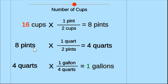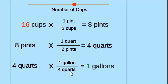Now if I have eight pints and I want to convert to quarts, I multiply by my conversion factor for quarts and pints. It's important to notice that we have pints on the bottom of our conversion factor — because I need to cross out my units to leave me with just quarts on top. And now converting four quarts to gallons, I use my conversion factor and divide four quarts by four, and I get one gallon.